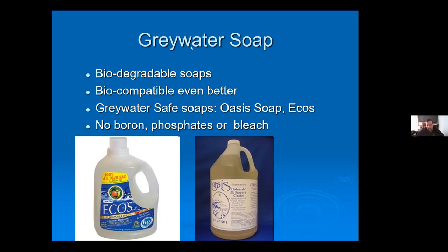A few soap brands I recommend: Ecos, which you can find almost anywhere, and Oasis, available online. Nowadays you can go to almost any grocery store and find organic soaps without phosphates or boron — there are a lot of options and you don't have to look too hard to find these products.